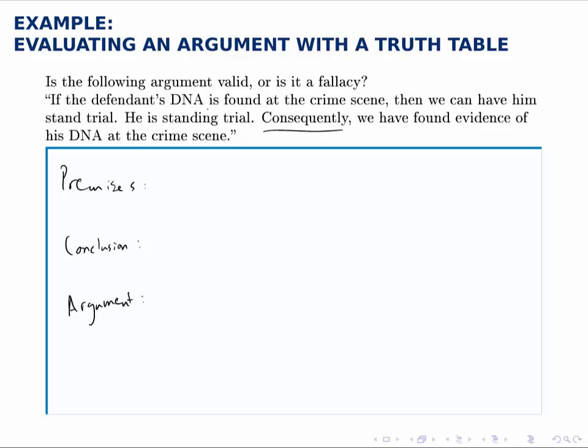We have if the defendant's DNA is found at the crime scene, then we can have him stand trial, and he is standing trial. So we need to define these in terms of P and Q. Let's call his DNA being found P, and let's call having him stand trial Q.